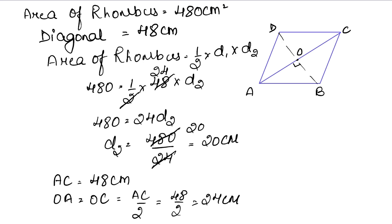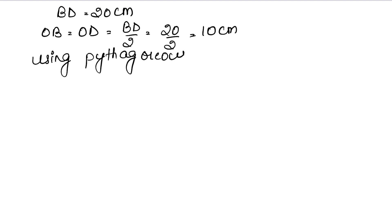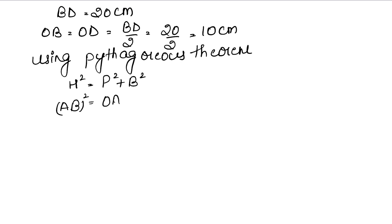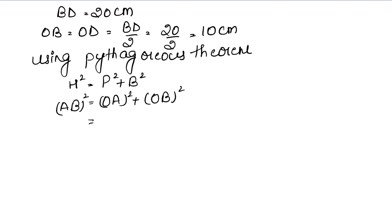The diagonals bisect at 90 degrees, forming a right angle triangle. We can find the hypotenuse — which is the side AB — using the Pythagoras theorem: H² = P² + B². So AB² = OA² + OB² = 24² + 10².